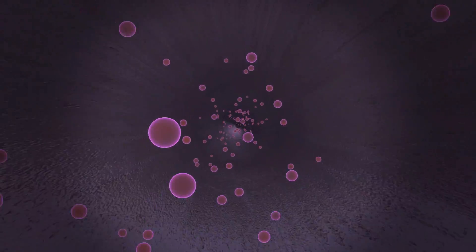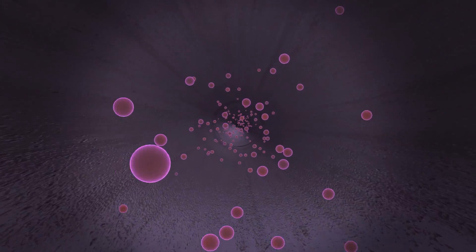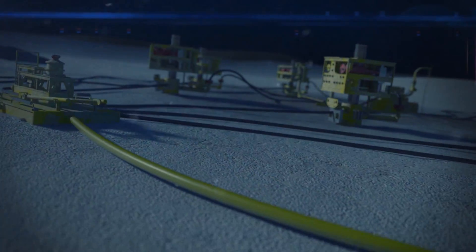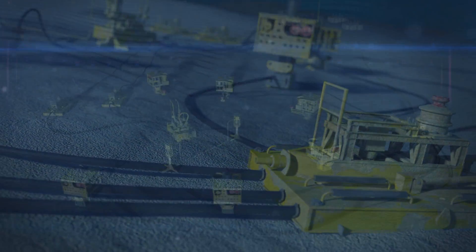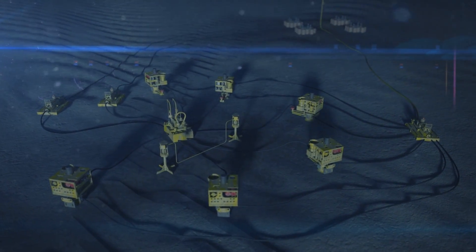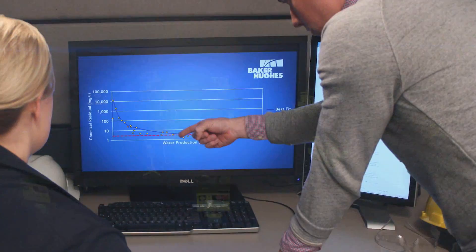The next generation of Baker Hughes scale inhibitors provide excellent performance against oil field scales without damaging sensitive reservoirs. They are less disruptive to fluid separation and are easier on the environment than traditional inhibitors.